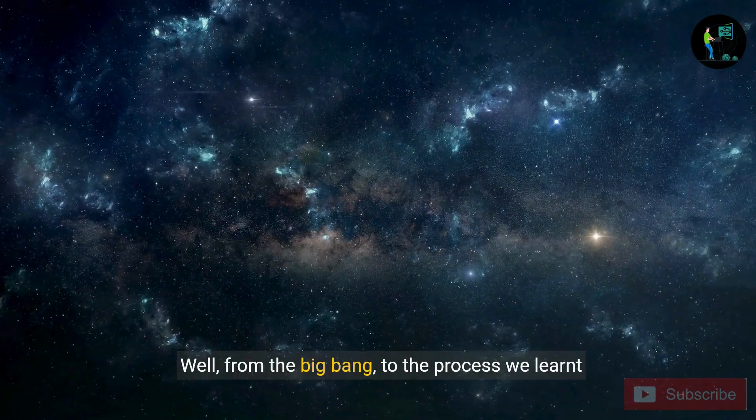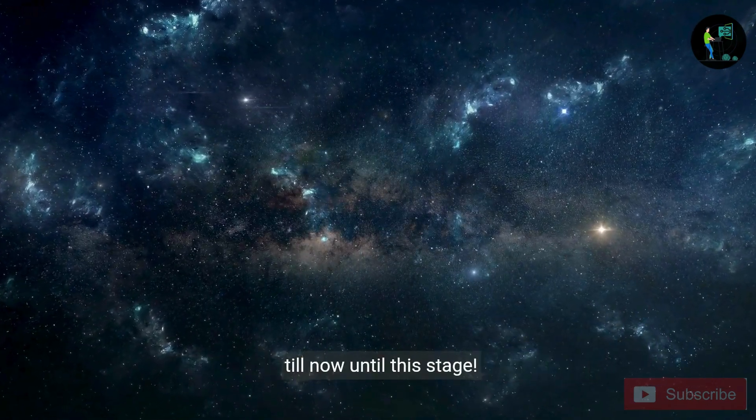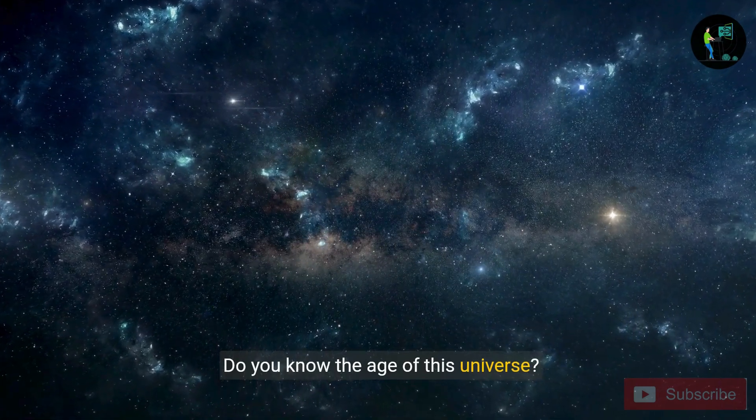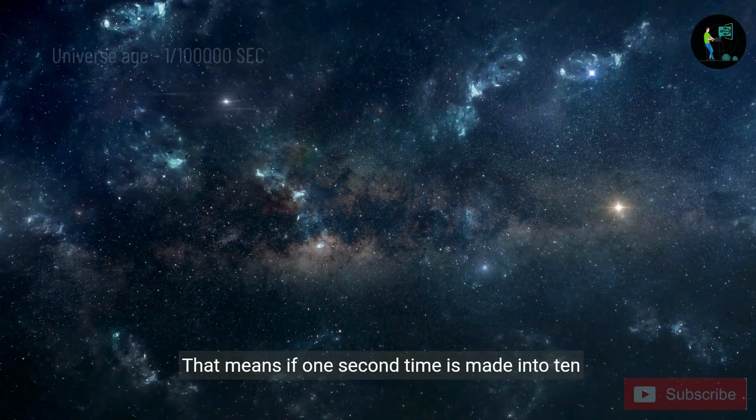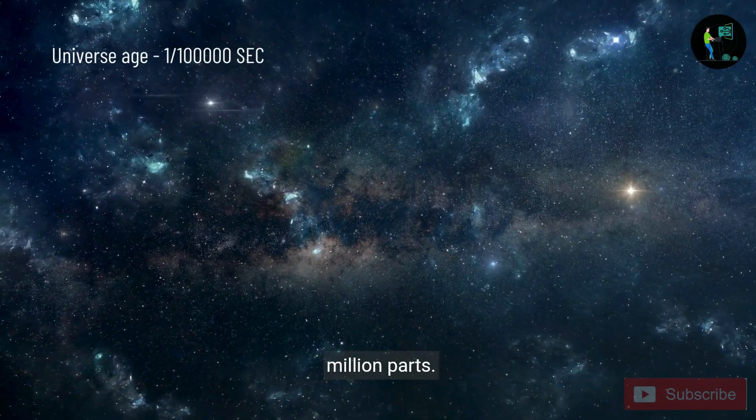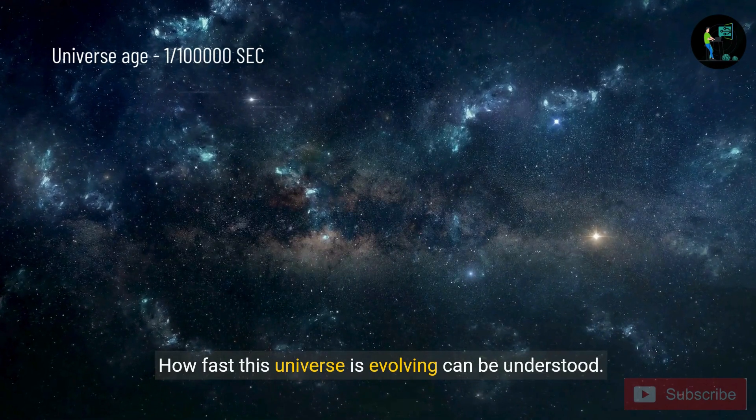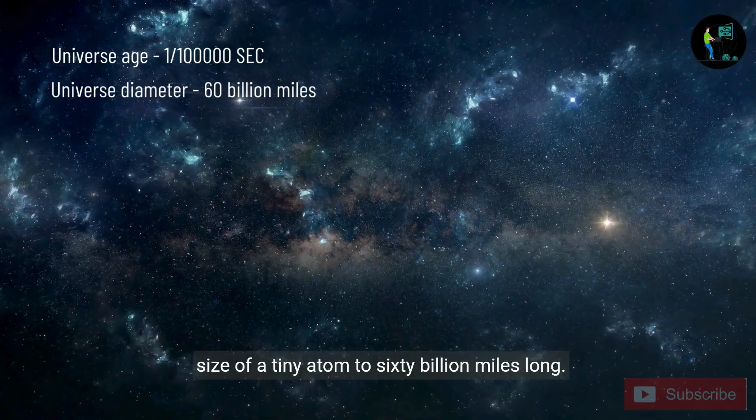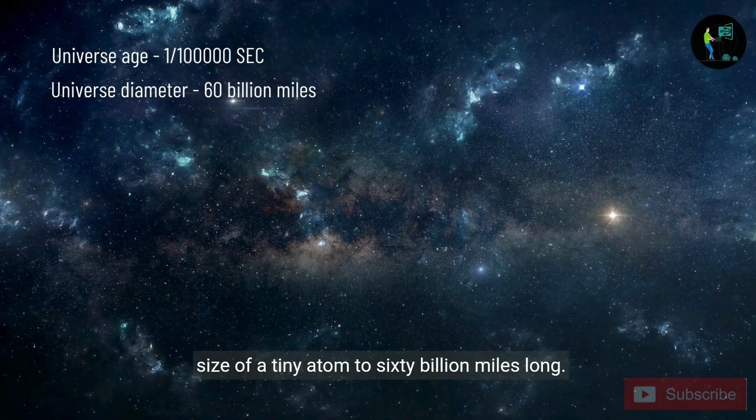Well, from the Big Bang, to the process we learnt till now, until this stage. Do you know the age of this universe? It's one millionth of a second. That means if one second time is made into ten million parts. How fast this universe is evolving can be understood. In this short time, the universe has grown from the size of a tiny atom to 60 billion miles long.